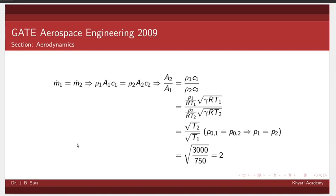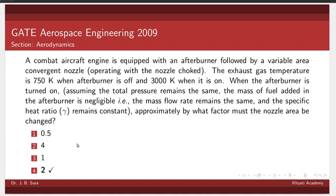So the simplification will give us square root of T2 by square root of T1, which is again square root of 3000 by 750, equal to 2. So the answer: approximately by what factor must the nozzle area be changed? The answer is 2.